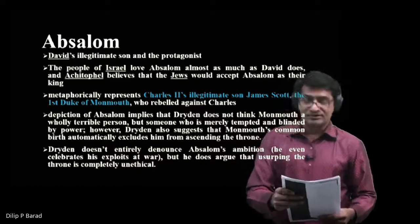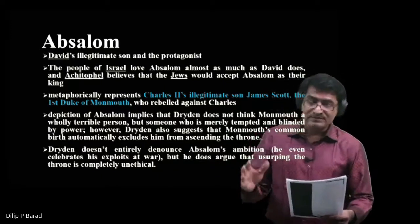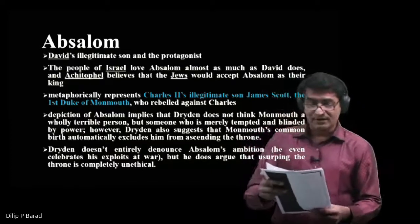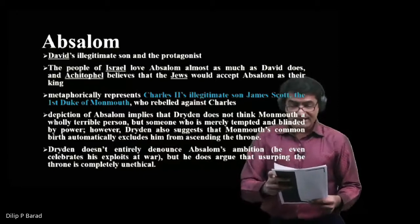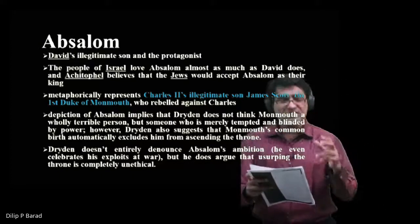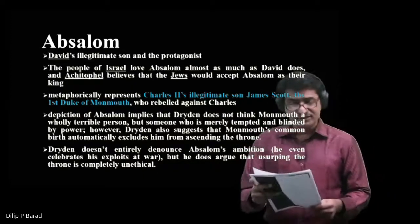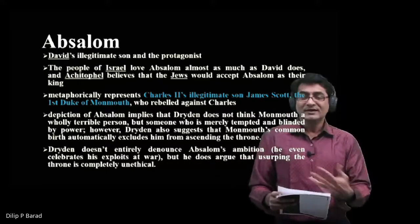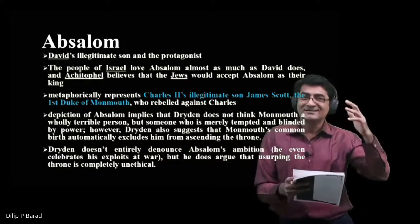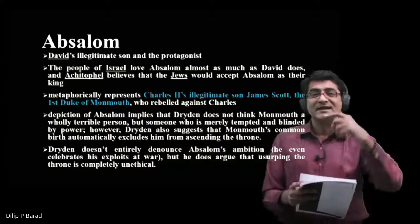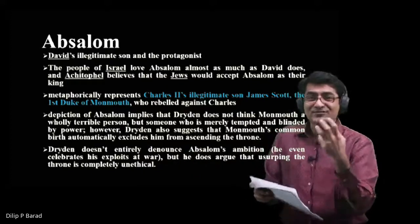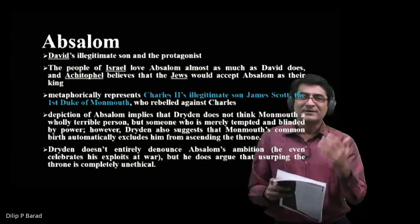The people of Israel love Absalom almost as much as David does, and Achitophel believes the Jews would accept Absalom as their king. Achitophel begins to encourage Absalom, heralding his birth and blood as royal, and tries to convince Absalom to rebel against David. However, Absalom is not a malicious man — he doesn't initially believe he has a right to the crown.